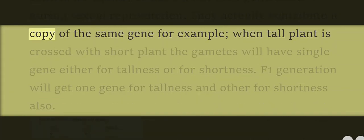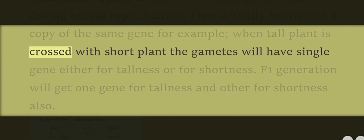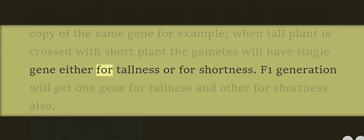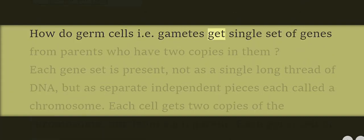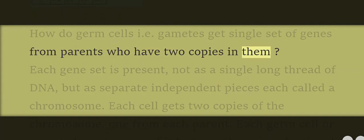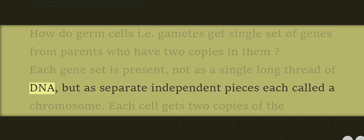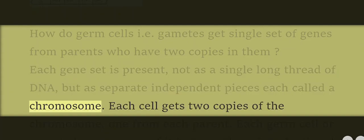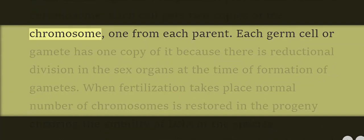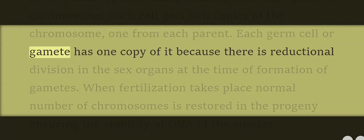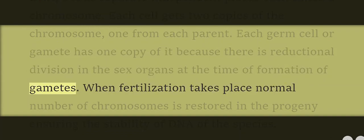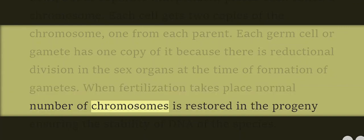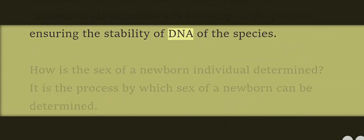Parents actually contribute a copy of the same gene. When a tall plant is crossed with a short plant, the gametes will have a single gene either for tallness or for shortness. F1 generation will get one gene for tallness and one for shortness. Germ cells (gametes) get a single set of genes because there is reductional division in the sex organs at the time of gamete formation. Each cell gets two copies of the chromosome, one from each parent. When fertilization takes place, the normal number of chromosomes is restored in the progeny, ensuring the stability of the DNA of the species.